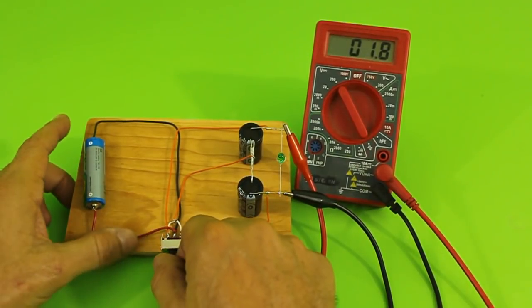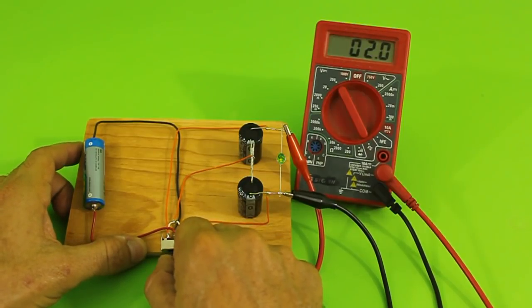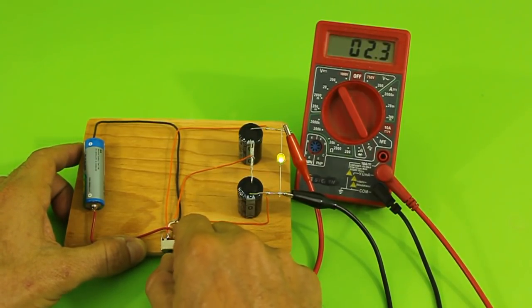We need to charge one capacitor at a time with each movement of the switch. So, in this kind of circuit, you need to continually move the switch in order for both capacitors to charge.